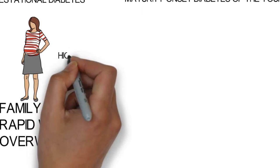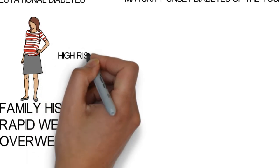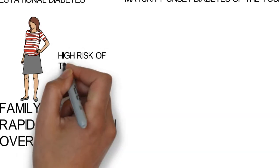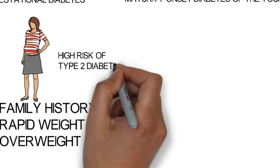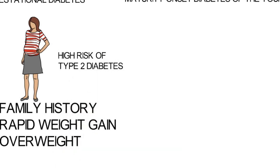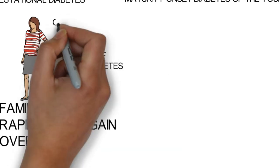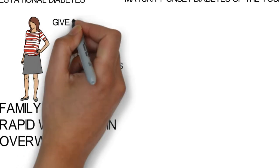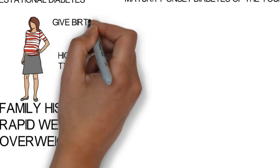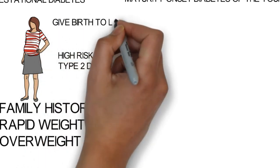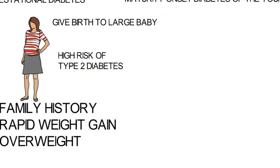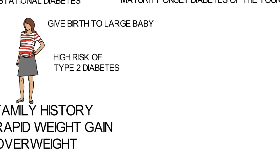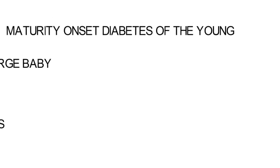Usually gestational diabetes resolves after pregnancy, but such individuals have a high risk of developing type 2 diabetes in the future. Those with gestational diabetes may give birth to a large-sized baby and may have a history of a large-sized baby in a previous pregnancy.